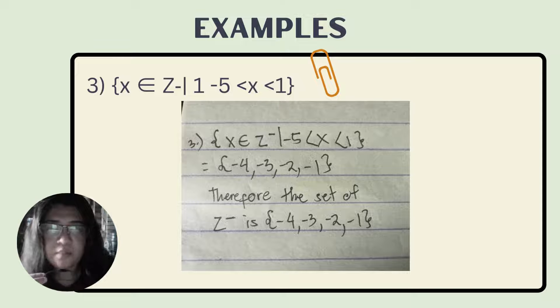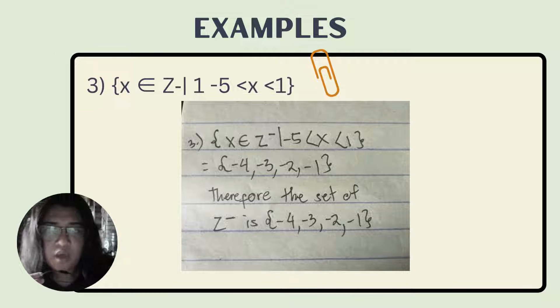Now for example number 3: set of all X elements of negative Z such as positive 1, negative 5 less than X, and X is less than 1. How did I get the answer? What we'll find is negative Z. What is the range from negative 5 to positive 1? What are all the negatives we can get from negative 5 to positive 1? This is it: negative 4, negative 3, negative 2, and negative 1.